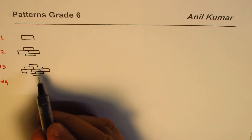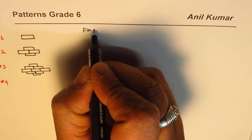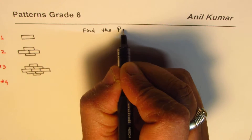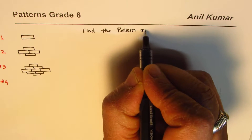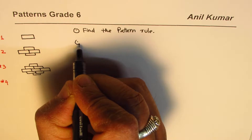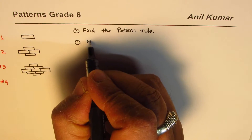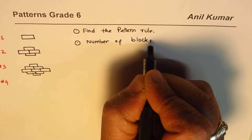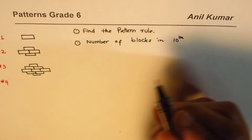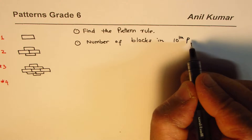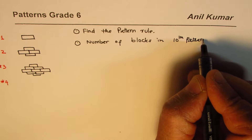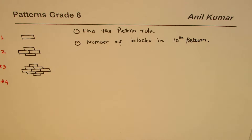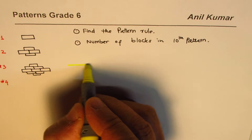The question for you is: find the pattern rule. We also need to find the number of blocks in the tenth pattern. Once you know the pattern rule, you can find the number of blocks in the tenth pattern. To work this out, we should make a table.